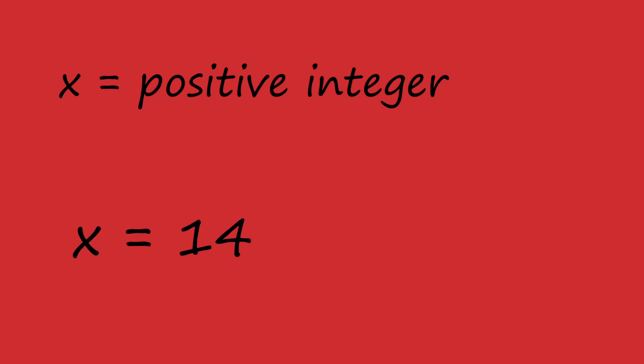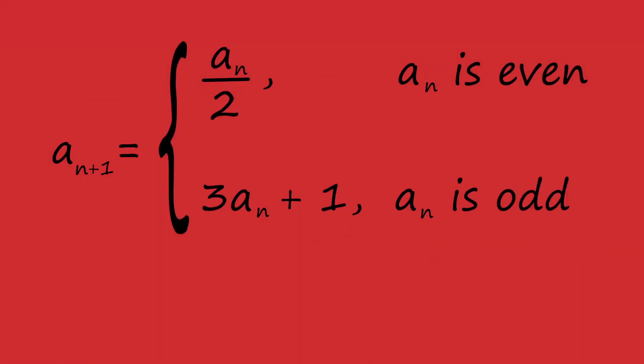Now, take any positive integer. If the number is even, cut it in half to get a new number. If the number is odd, multiply it by 3 and then add 1 to get a new number. If that new number is not 1, do this process again to that new number. Try this out.